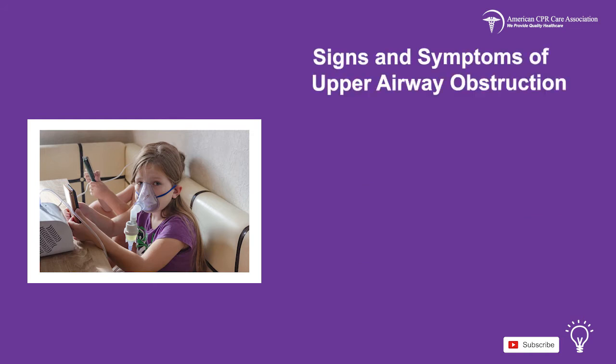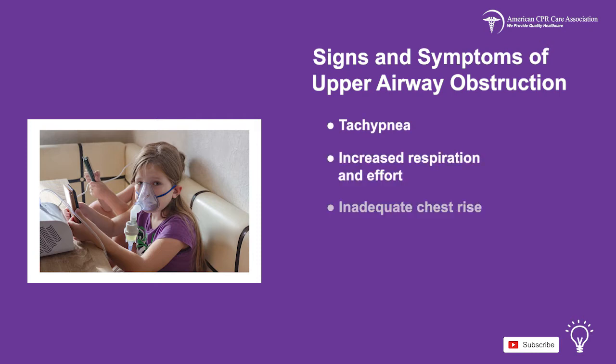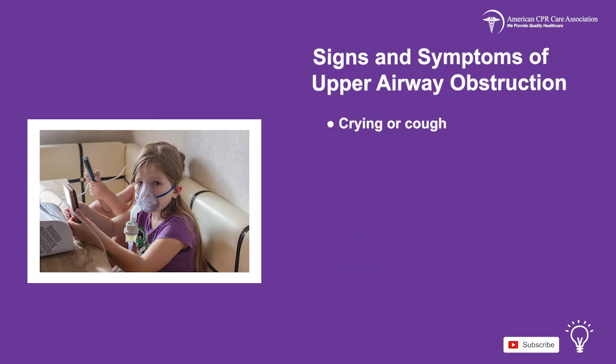The signs and symptoms of an upper airway obstruction are tachypnea, increased respiration and effort, inadequate chest rise, stridor, a change in voice, crying or coughing, cyanosis, drooling, and an increased respiratory rate.